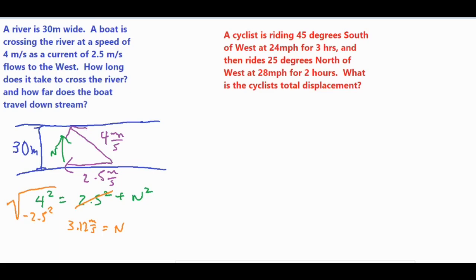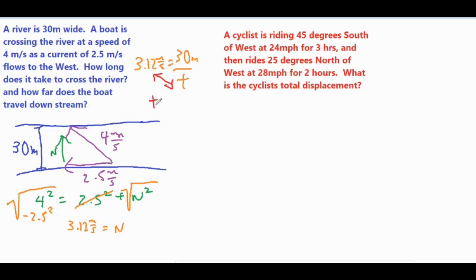We plugged in our numbers, subtracted the 2.5 squared from both sides, and took the square root to get our northern vector N equal to 3.12 meters per second. To find how long it takes to cross the river, we use speed equals distance over time: 3.12 meters per second equals 30 meters over time. Cross-multiplying gives us a time of 9.62 seconds.